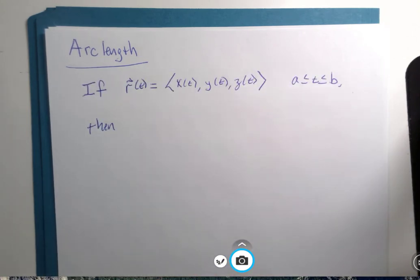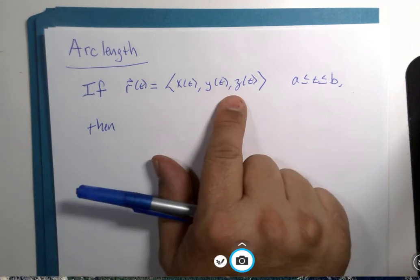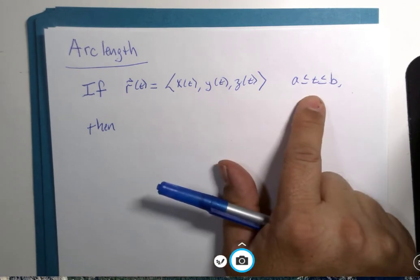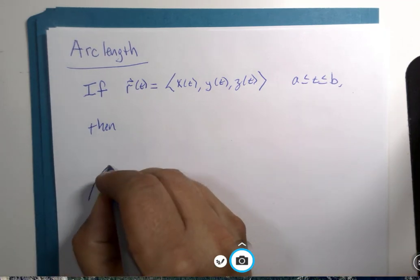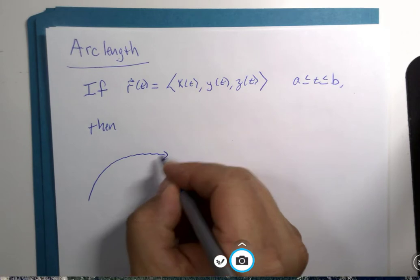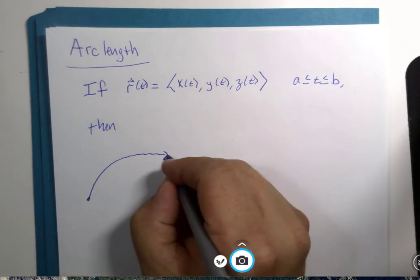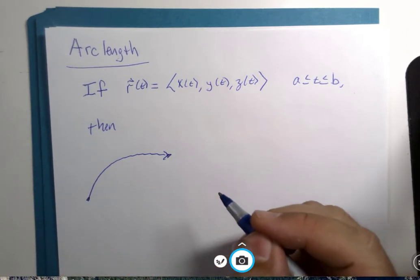So, if you have a vector function, this one happens to have three components, and time goes from A to B. We're looking at what happens to the curve from here to here in two or three dimensions.